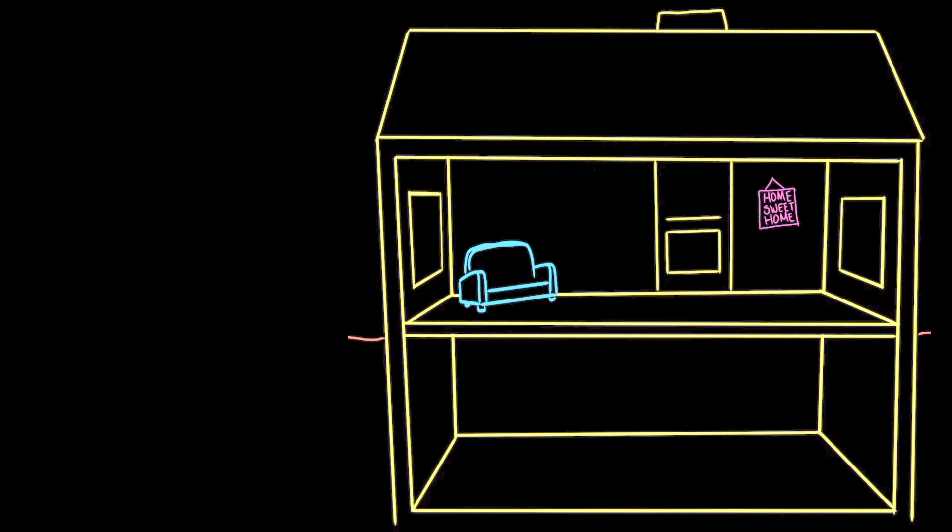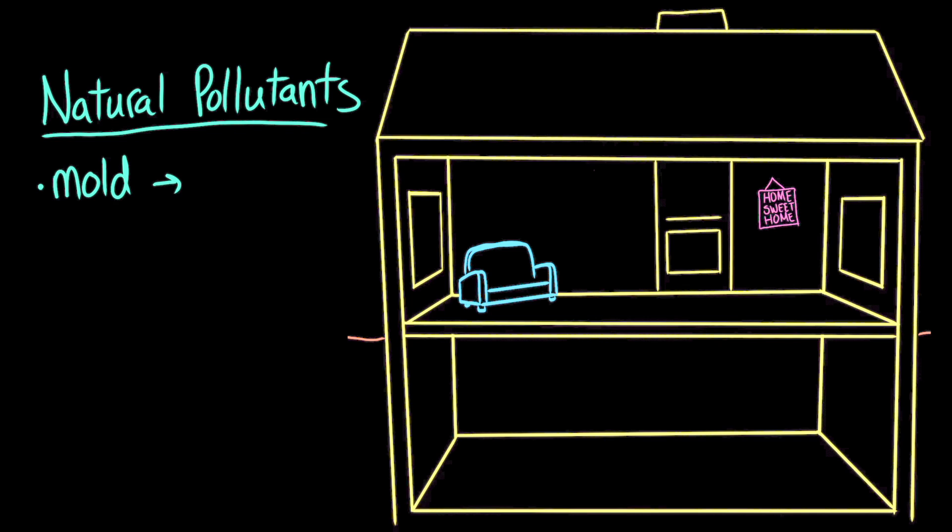It's also possible that Ava's house has natural pollutants, like mold, dust, or even radon. Mold is a type of microscopic fungus that's always floating around in the air, and breathing it in can cause itchy eyes, runny noses, and it can trigger asthma attacks.